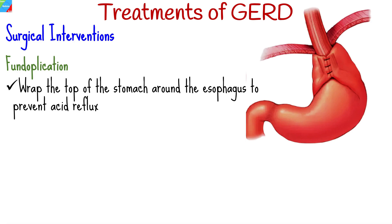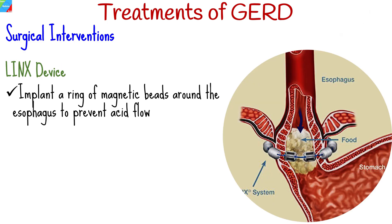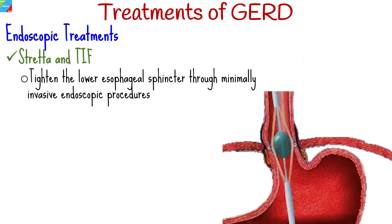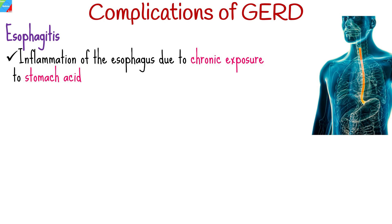Surgical interventions include fundoplication, which involves wrapping the top of the stomach around the esophagus to prevent acid reflux. The LINX device involves implanting a ring of magnetic beads around the esophagus to prevent acid flow. Endoscopic treatments including Stretta and transoral incisionless fundoplication tighten the lower esophageal sphincter through minimally invasive endoscopic procedures.